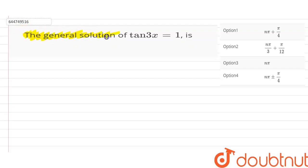The question asks for the general solution of the equation tan(3x) = 1. First, we know that the equation tan(x) = tan(y) has the general solution x = nπ + y.